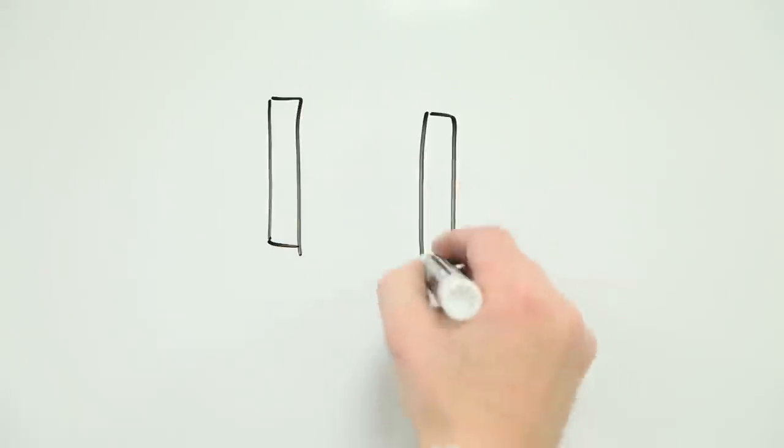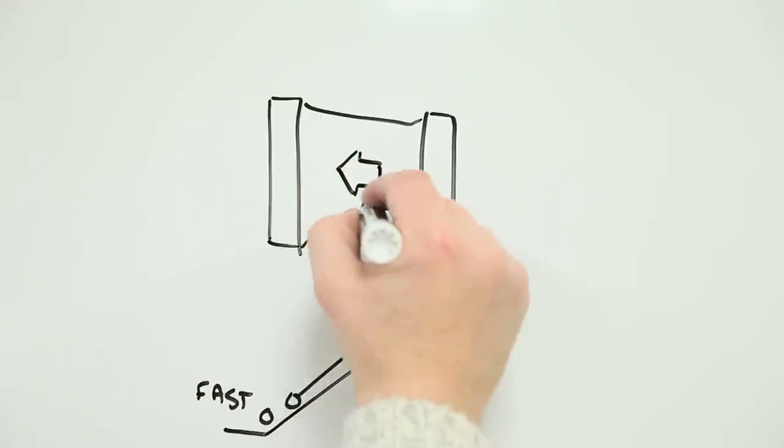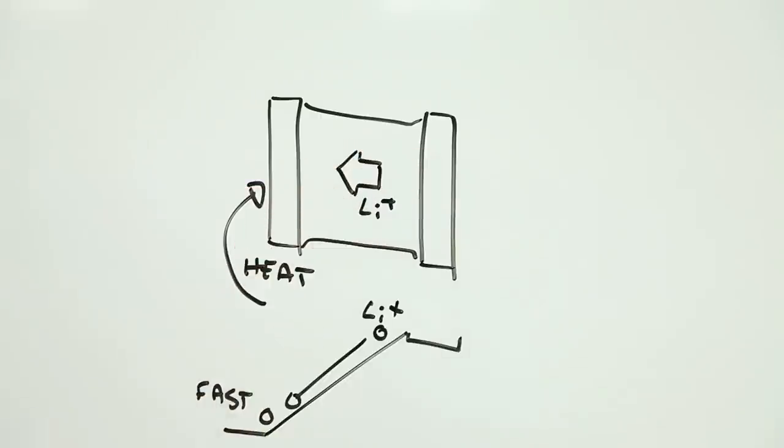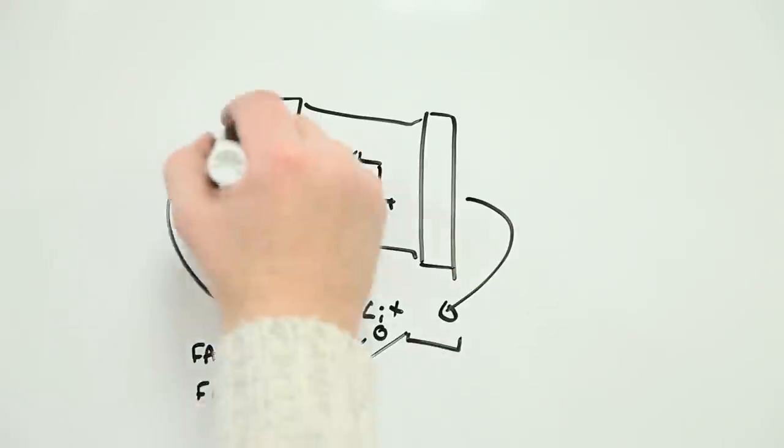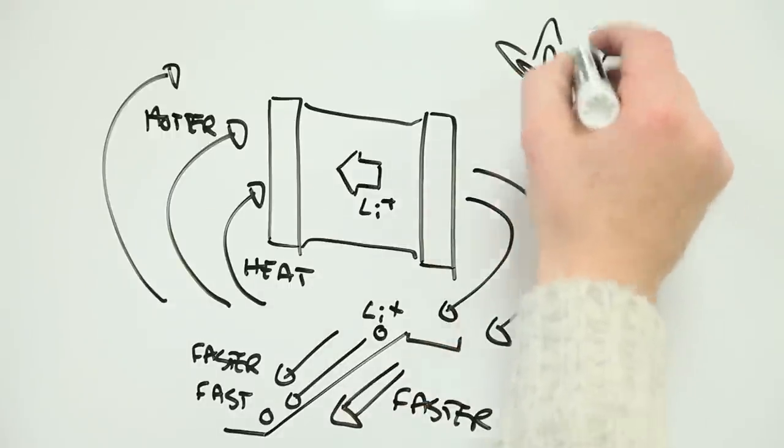To make matters worse, the hotter the battery gets, the more readily the lithium ions roll down the chemical energy slope and the faster things heat up. In the worst case, this positive feedback loop leads to thermal runaway in a battery that thinks it's an incendiary device.